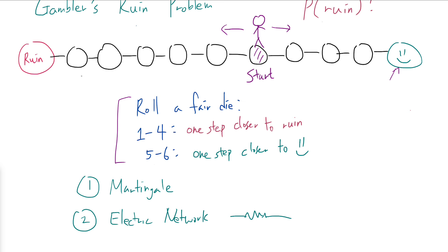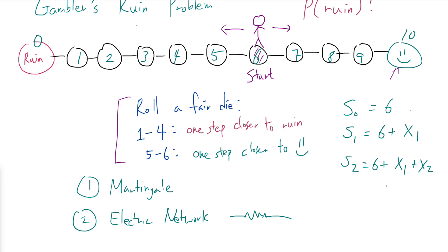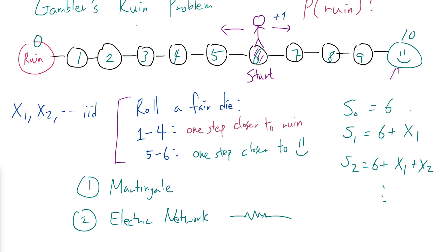Let's set up some notation. Label the states as 0 through 10, where 0 is ruin, 10 is the smiley face, and 6 is the starting position. The random walk starts at initial state s₀ = 6, and after that we keep adding x₁, x₂, and so on, where these increments are determined by rolling a fair die. Each xᵢ is i.i.d., and we either add plus one, moving closer to the smiley face, or subtract minus one, moving closer to ruin.